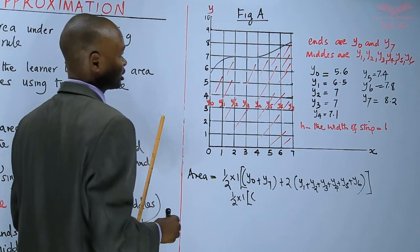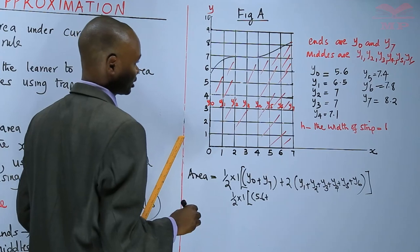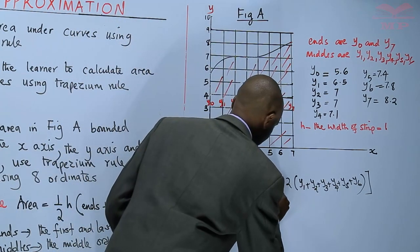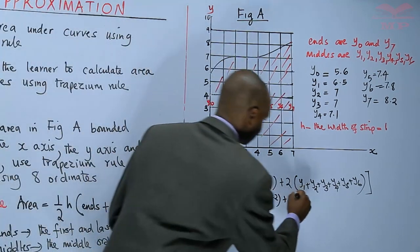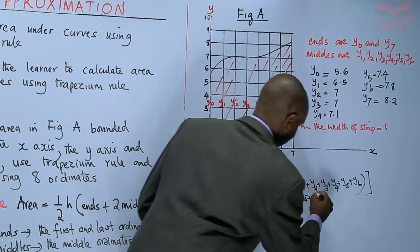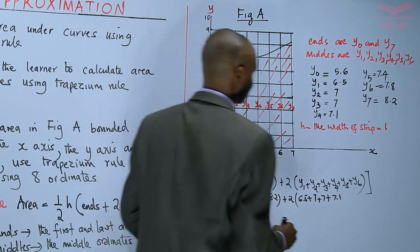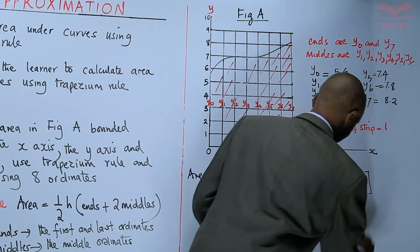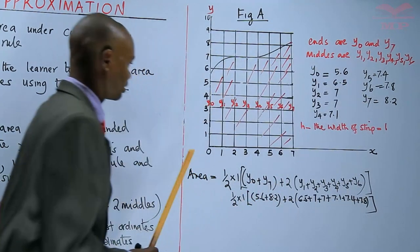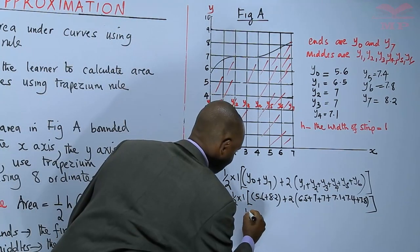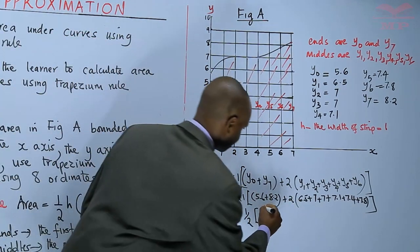It's a half times 1 into y0 is 5.6 plus y7 is 8.2 close brackets plus twice. y1 is 6.5, y2 is 7, y3 is 7, y4 is 7.1, y5 is 7.1, and y6 is 7.8. And I close the brackets. So I'll simplify. This will be a half into 5.6 plus 8.2, I'll get 13.8.